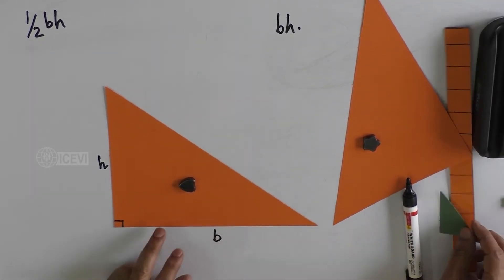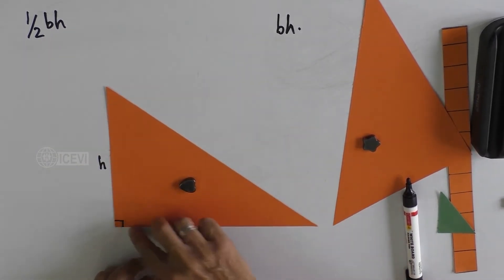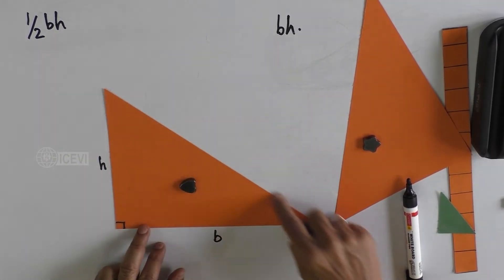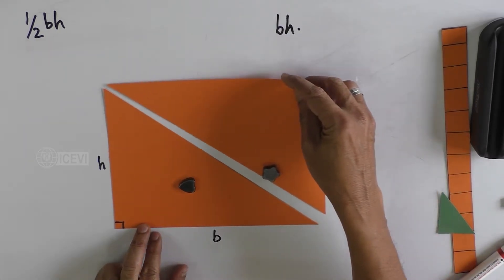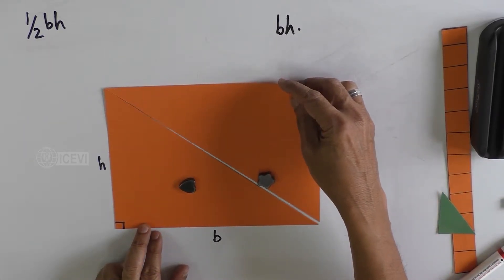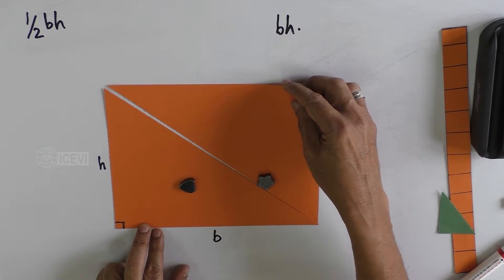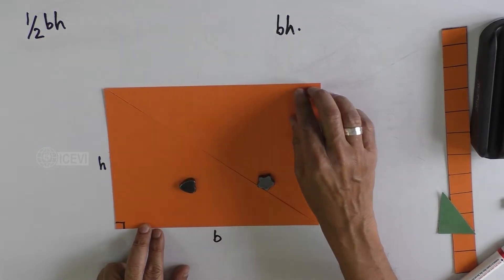The other two angles are acute angles, that is, less than 90 degrees. The three sides are not equal. Each side is different. This triangle is nothing but half of the rectangle.